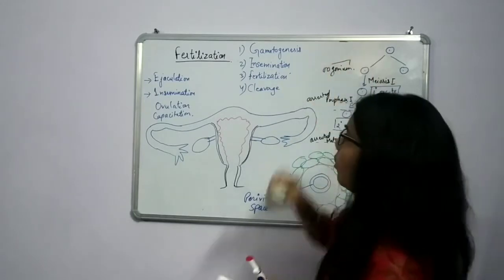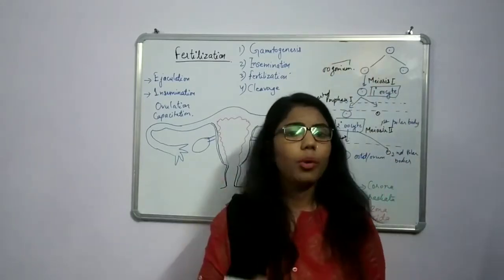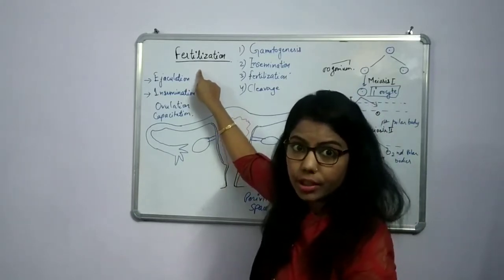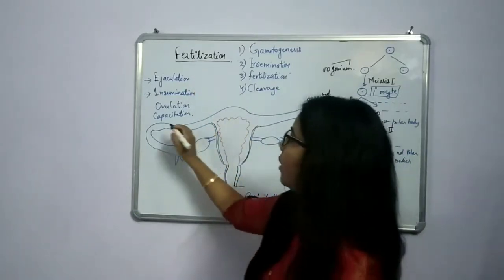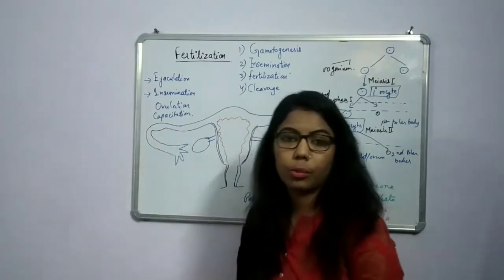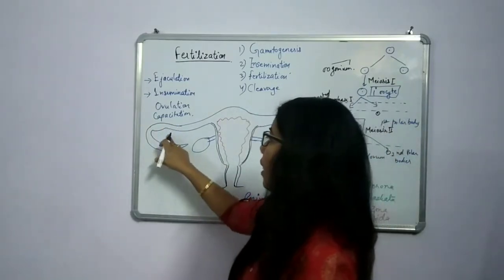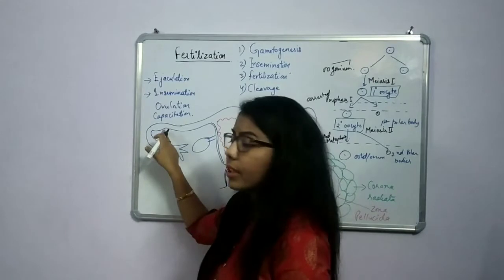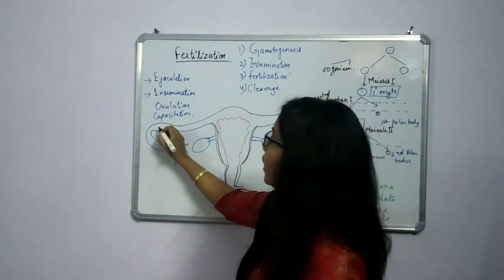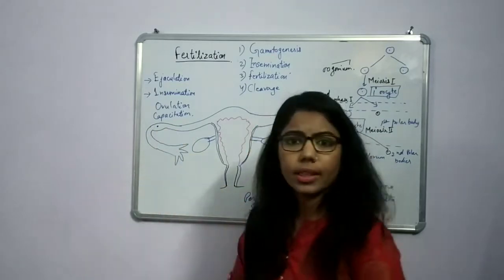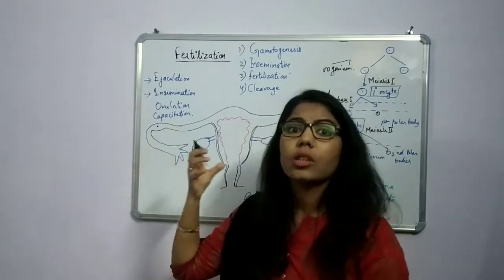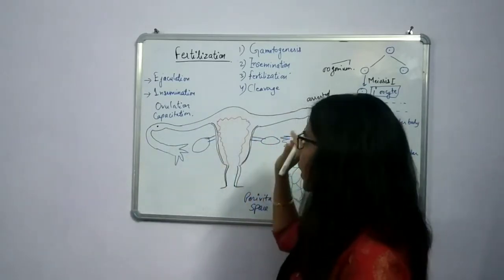Now, how does fertilization take place? The second point is the site of fertilization — where does it occur? We all know the answer: in the fallopian tube. More specifically, it takes place in the ampullar region, which is the swollen structure of the fallopian tube.